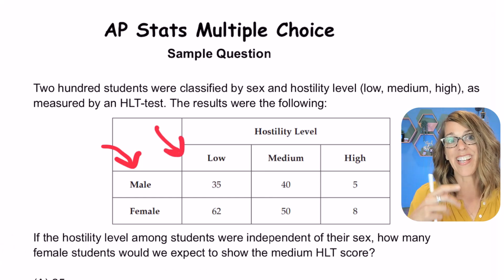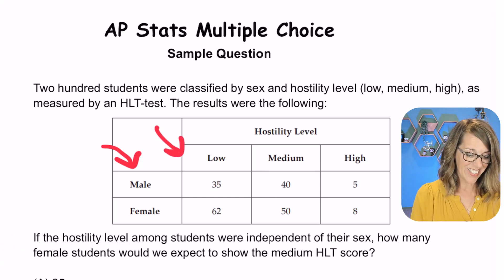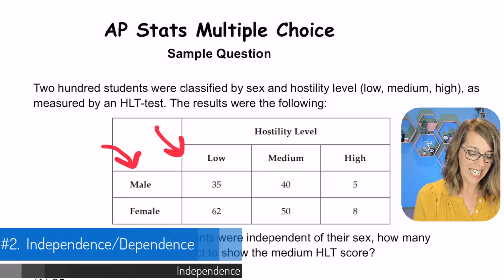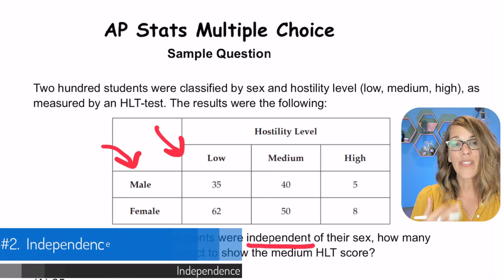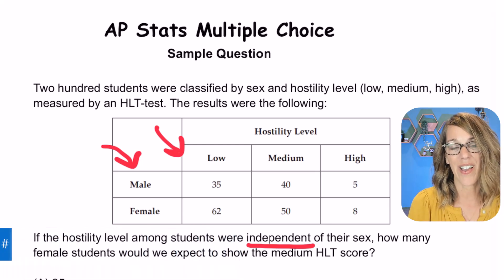As I continue reading that second sentence, it says if the hostility level among students were independent. So I know I'm going to be running a chi-square test of independence.